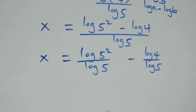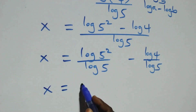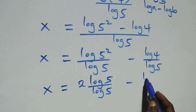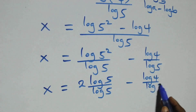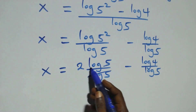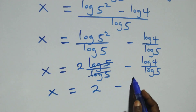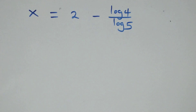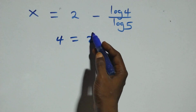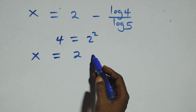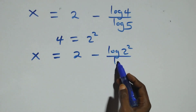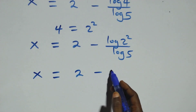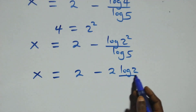We apply the power rule of logarithm — 2 comes out front. So x equals to 2 log 5 over log 5 minus log 4 over log 5. The log 5 terms cancel, giving x equals to 2 minus log 4 over log 5. Since 4 equals 2 squared, we have x equals to 2 minus log 2 squared over log 5. Applying the power rule again, x equals to 2 minus 2 log 2 over log 5.